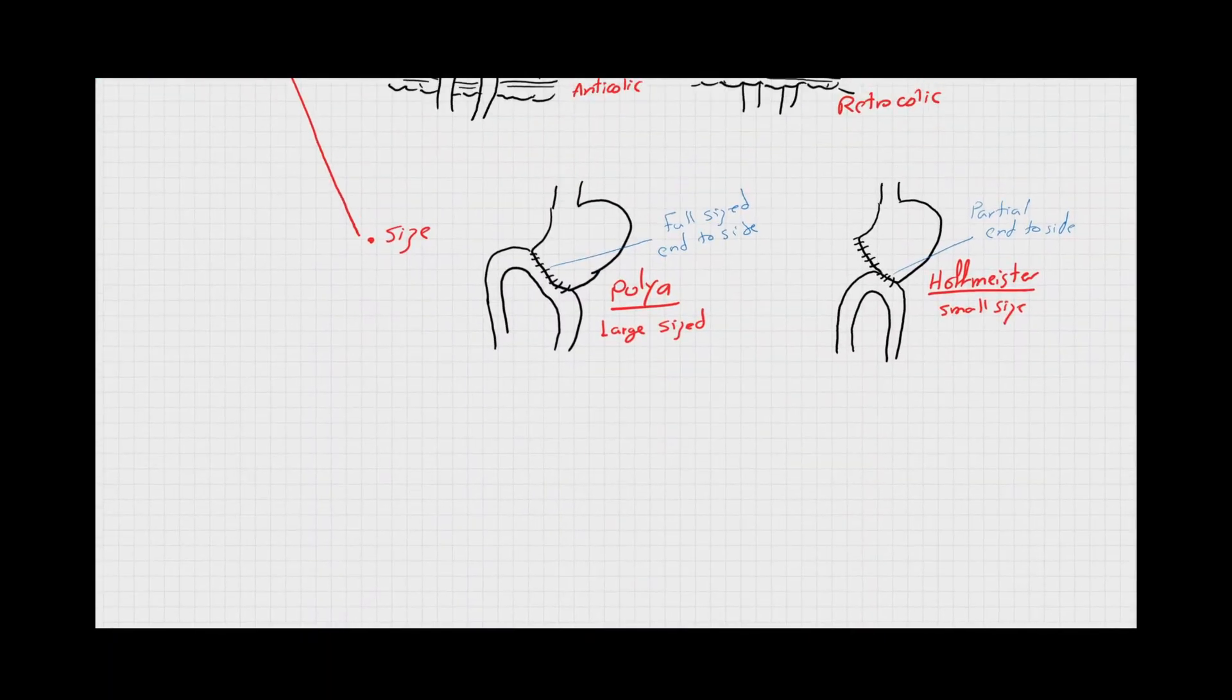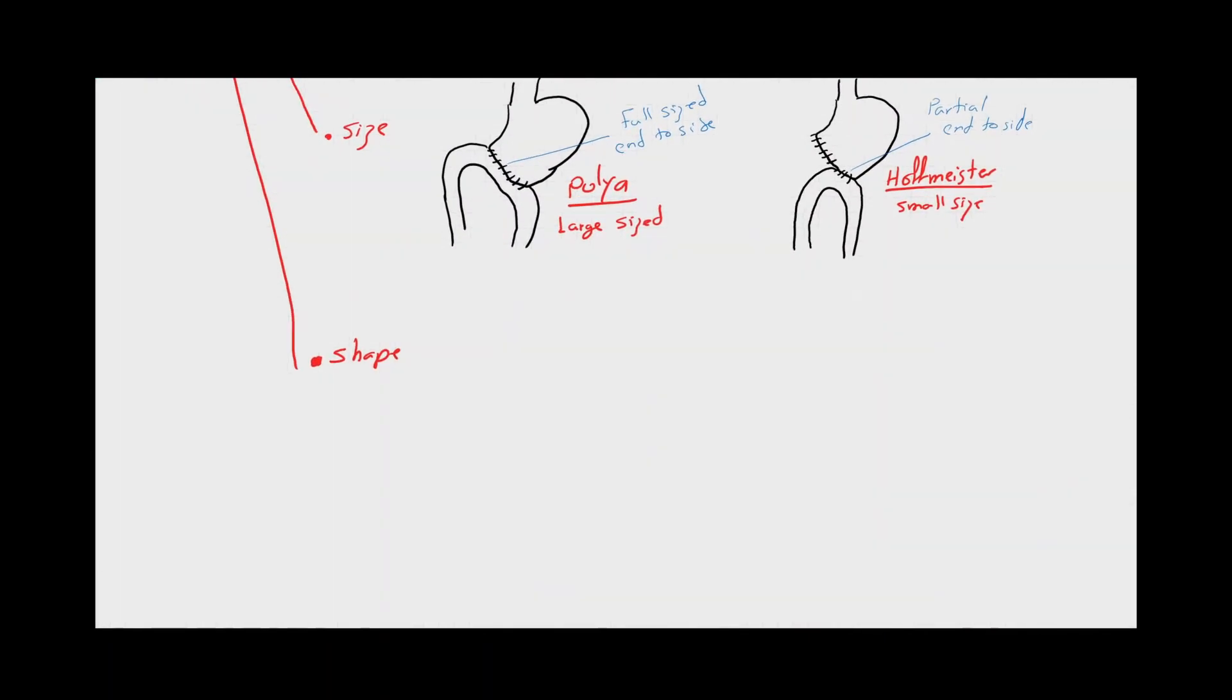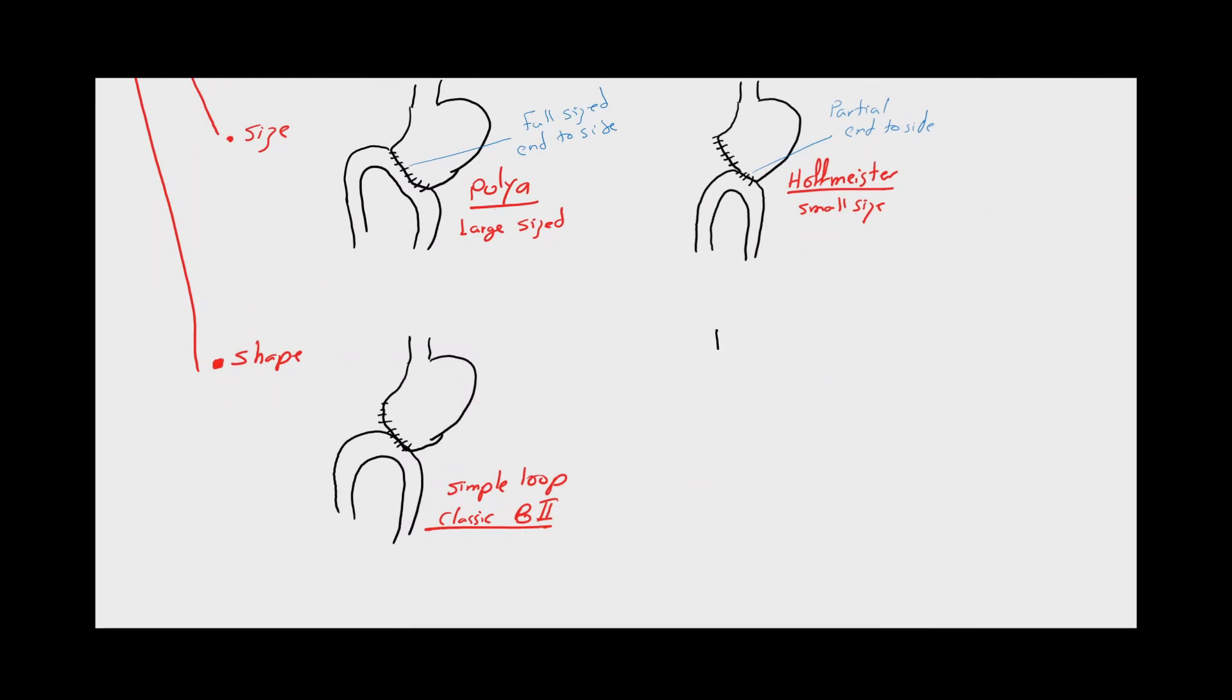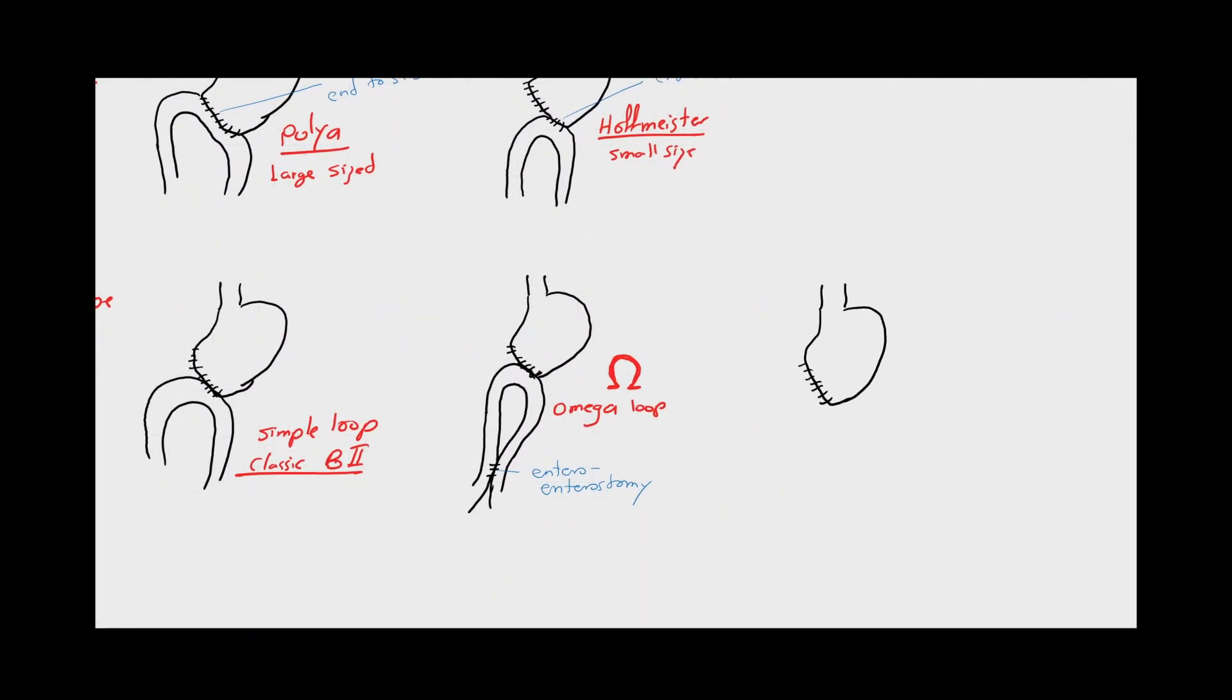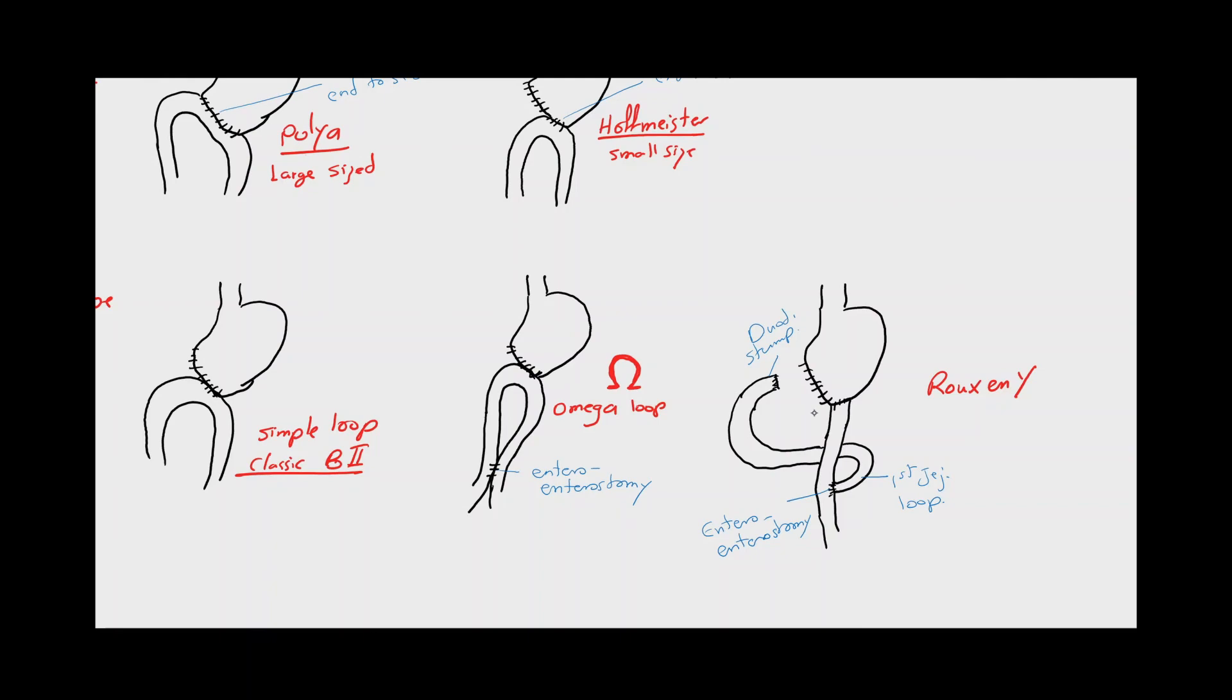According to the shape of the anastomosis, there is a simple loop anastomosis, which is the classic Billroth 2 reconstruction, and an omega-shaped loop in which an anterior enterostomy is constructed between the afferent and efferent loops of the anastomosis. The third variation according to the shapes is the Roux-en-Y anastomosis, in which the first jejunal loop is split. Its distal limb is connected to the stomach as an efferent loop, and its proximal limb is connected to the distal limb approximately 45 cm below the gastrojejunostomy.